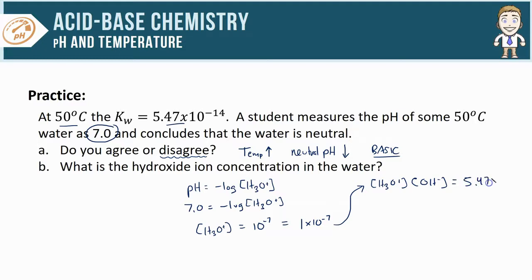Now that I know the H3O+ concentration, I can plug it into the equilibrium expression. Remember to use the new K value of 5.47 × 10^-14, since that's the temperature my water is at. This makes the final hydroxide concentration 5.47 × 10^-7 M. Don't forget capital M for molarity.